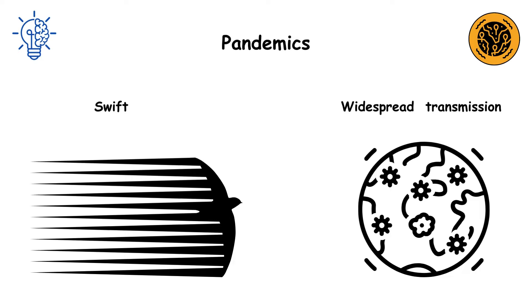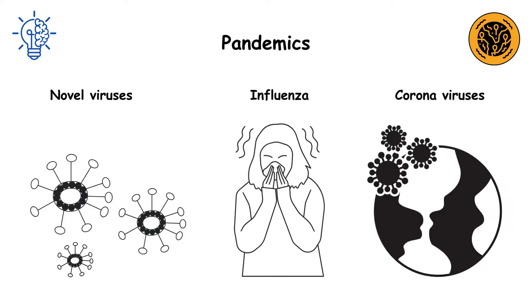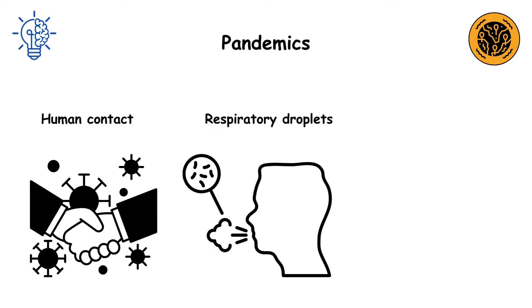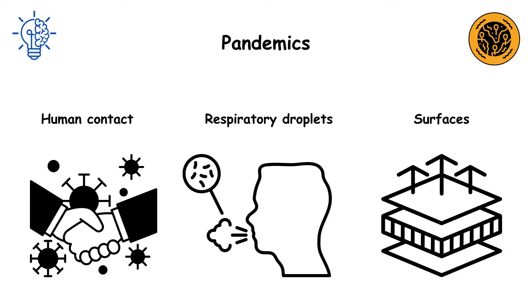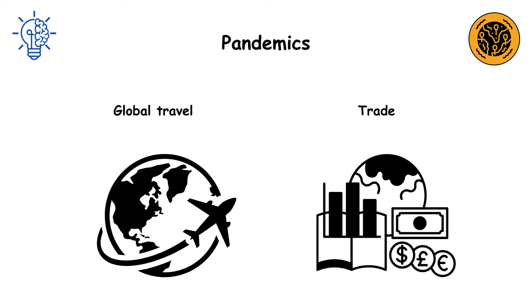Typically caused by novel viruses, such as influenza and coronaviruses, pandemics spread through human contact, respiratory droplets, and surfaces. Global travel and trade further accelerate their reach.